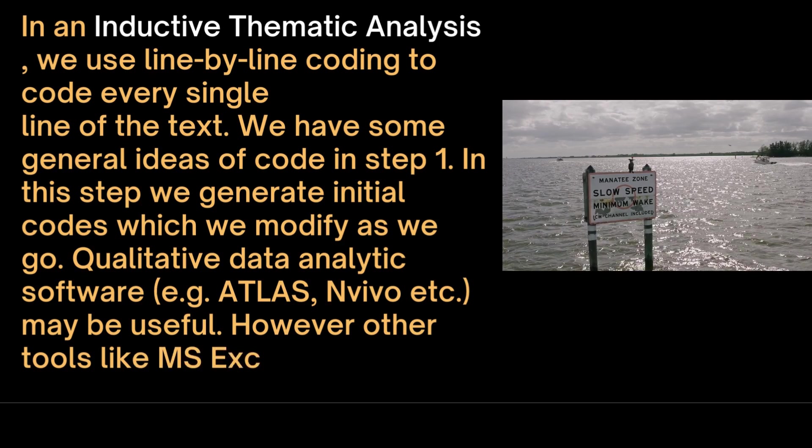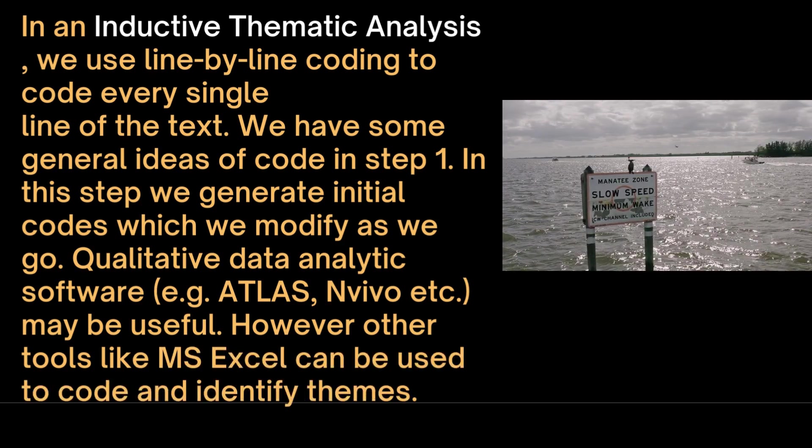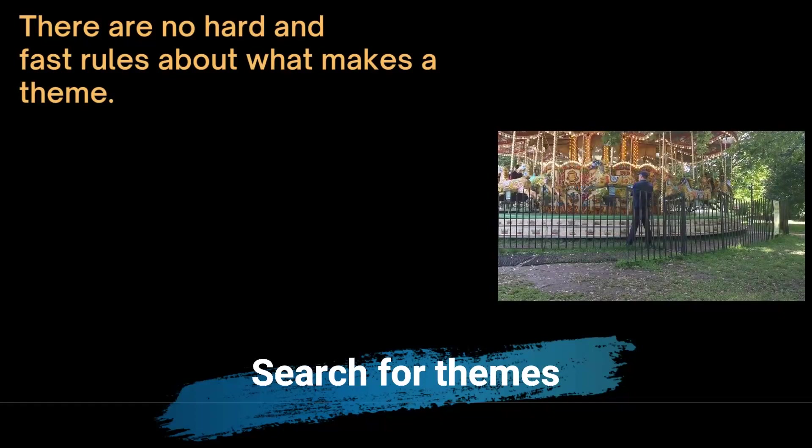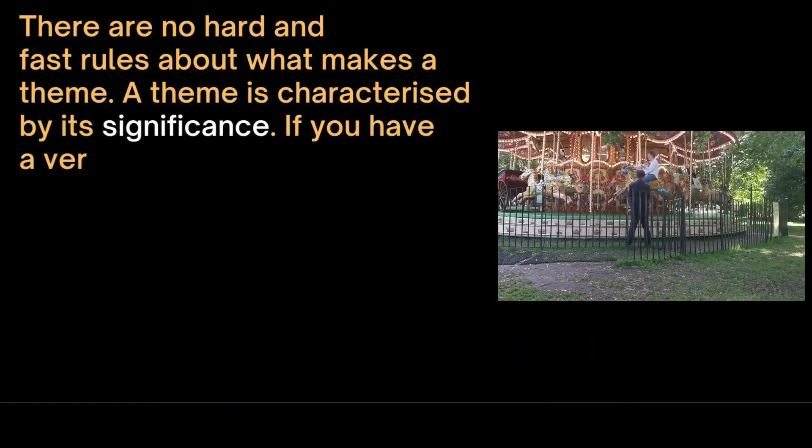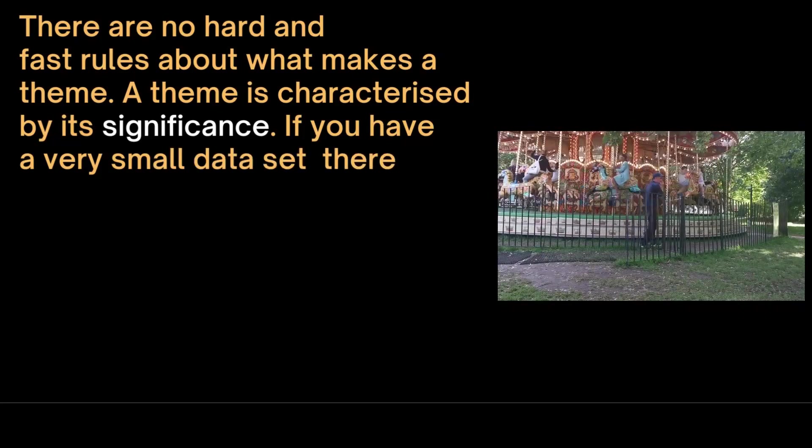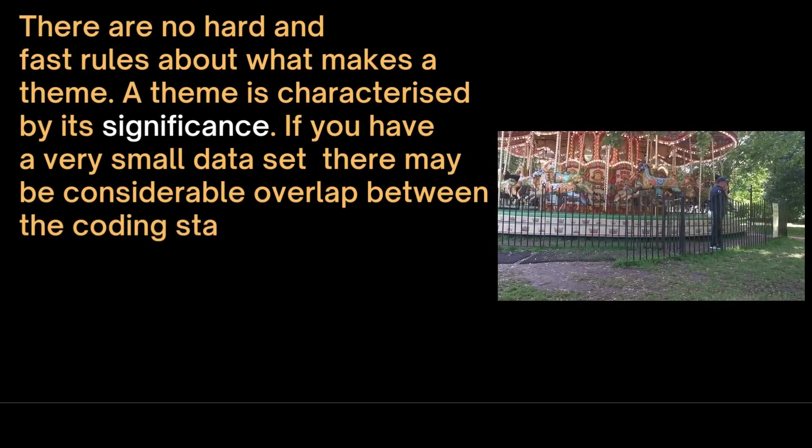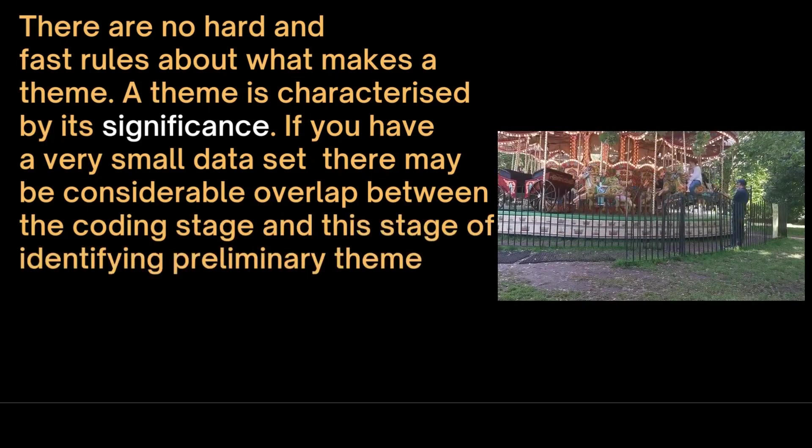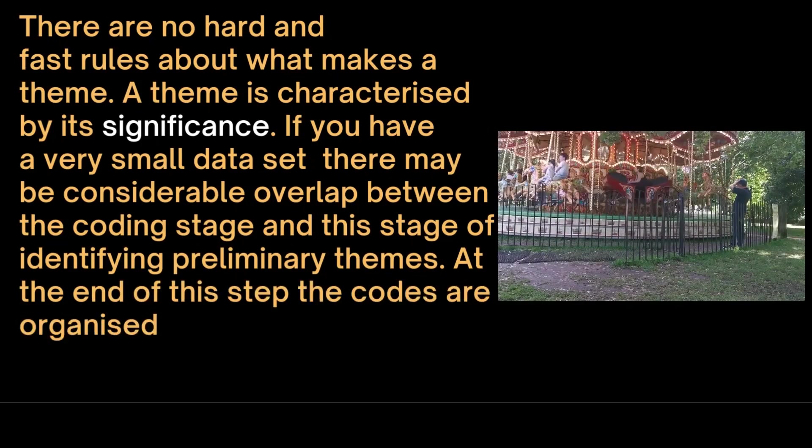In the third step, we search for themes. There are no hard and fast rules about what makes a theme. A theme is categorized by its significance. If you have a very small data set, there may be considerable overlap between the coding stage and this stage of identifying preliminary themes. At the end of this step, the codes are organized into broader themes that address the research question.